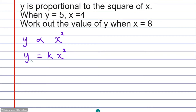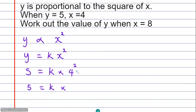Now replace the values for y and x: y is 5, so 5 = k times x squared, and x is 4, so we have 4 squared. Simplifying: 5 = k times 16, since 4 squared is 16. We can now get a value for k: k = 5 over 16.